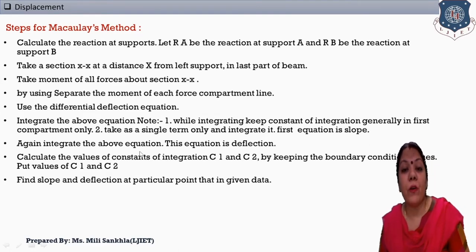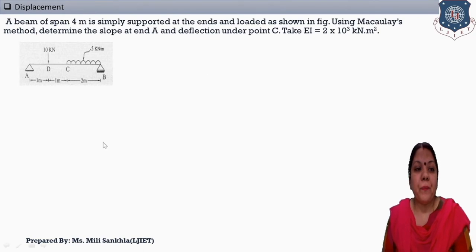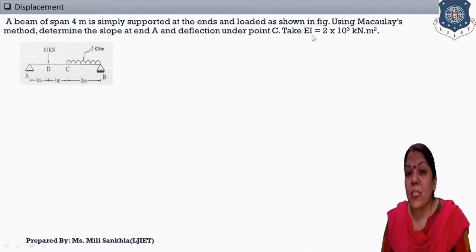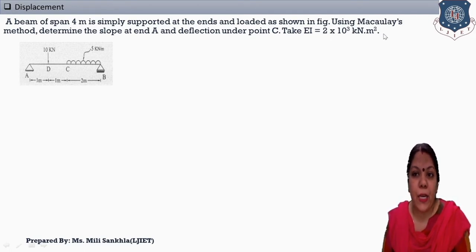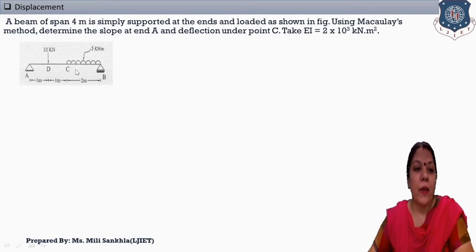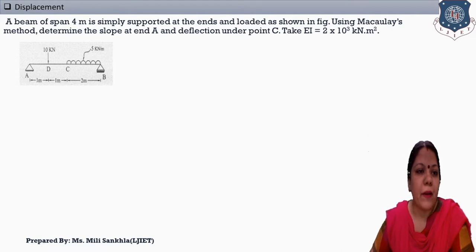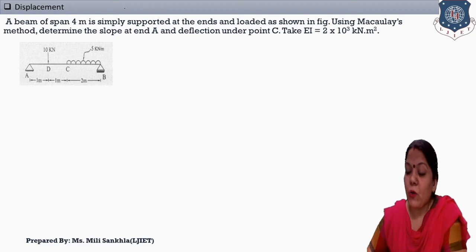Now we solve the first example of Macaulay's method. The given data: a beam of span 4 meters, simply supported, loaded as shown in the figure. Using Macaulay's method, determine the slope at A and the deflection under point C. The flexural rigidity EI is 2 × 10³ kN/m². In the beam, a point load of 10 kN is given, and a UDL of 5 kN/m is also given.